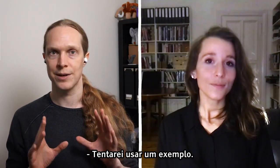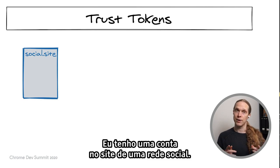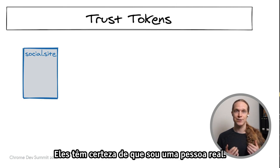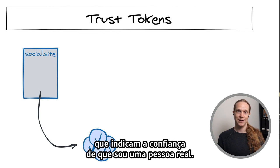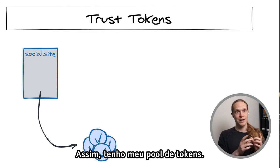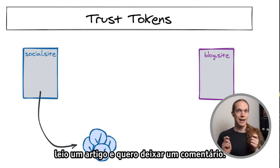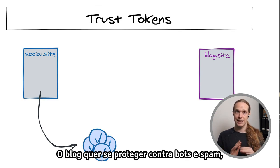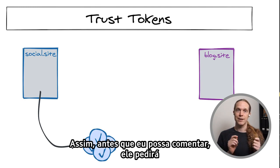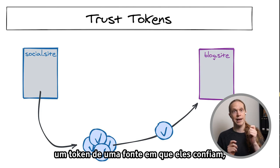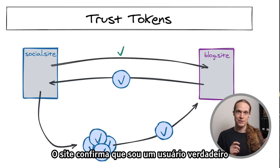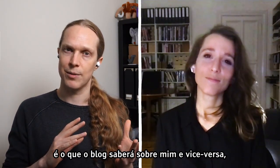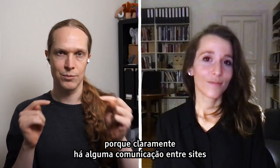Let me walk through an example. I have an account on a social networking site, I've had it for years, they're pretty sure I'm a real person, so they can issue tokens to my browser indicating their trust. Now I go to a blog I've never visited, read an article, and want to leave a comment. The blog wants to protect against bots and spam, so before I can comment they ask for a token from a source they trust. I give them my social site token, they go to the social site to redeem it, the social site says it's genuine — and then I can make my comment. The concern: what does the blog site learn about me, and vice versa? Clearly there's some cross-site communication going on.